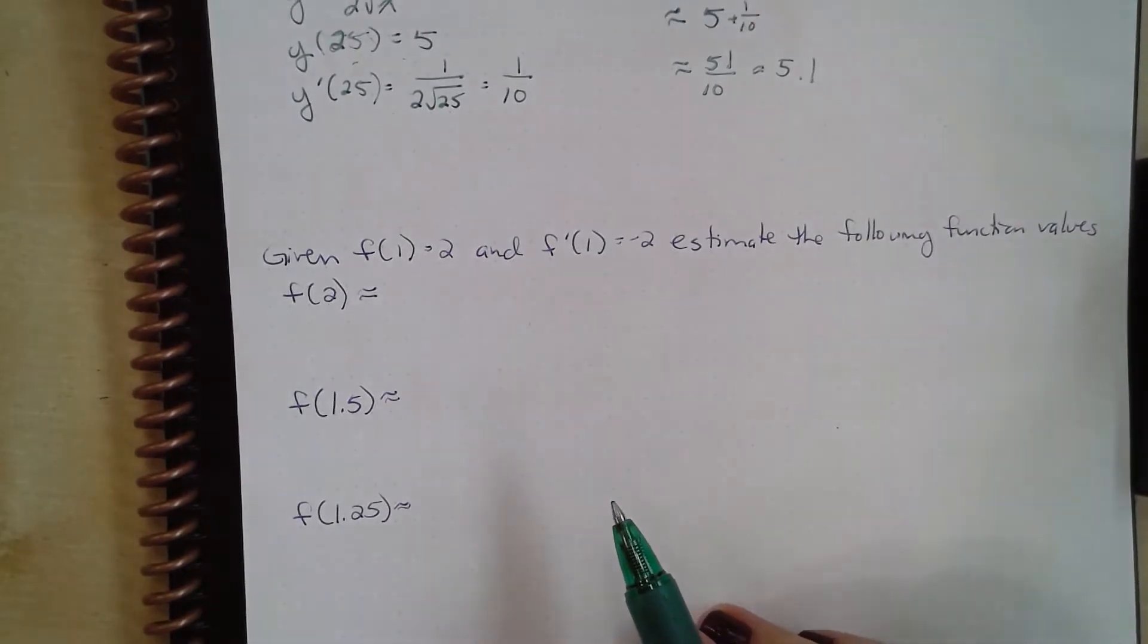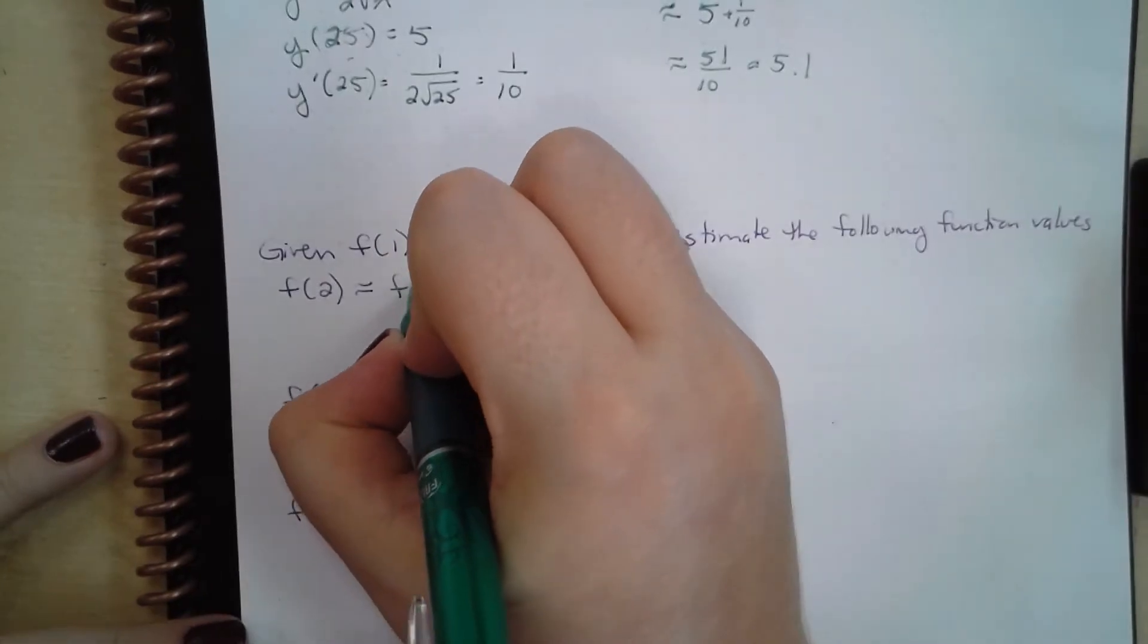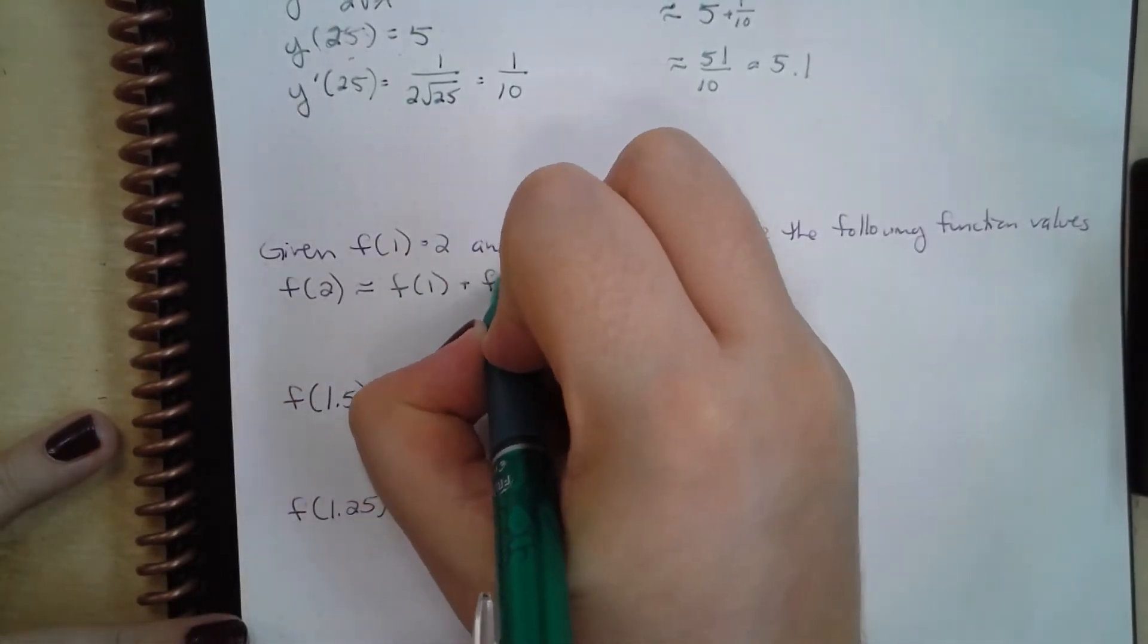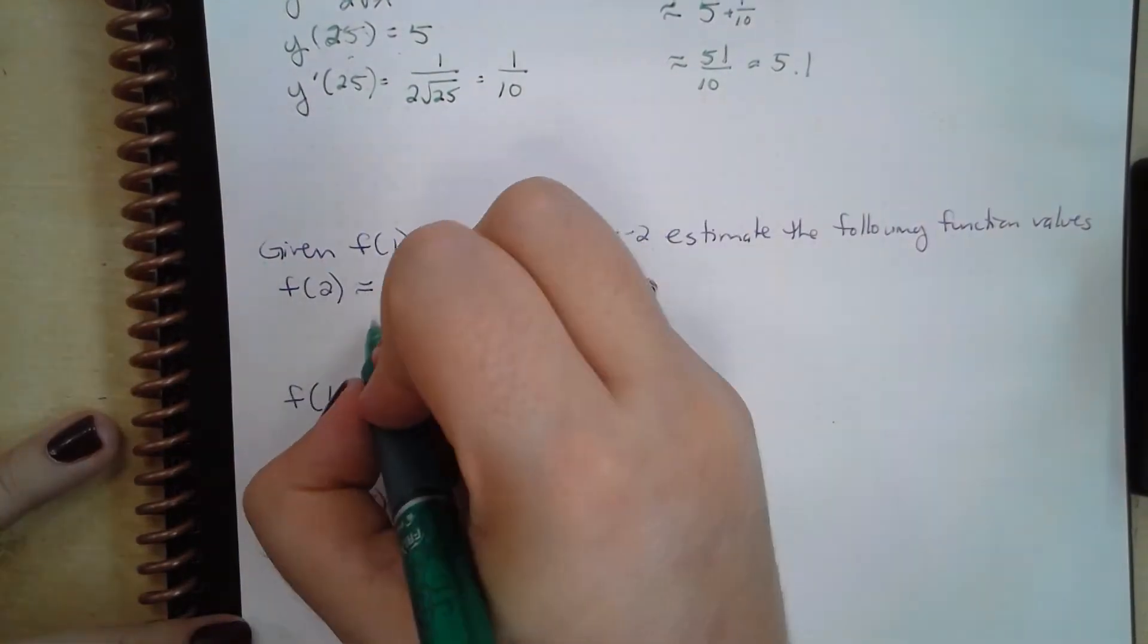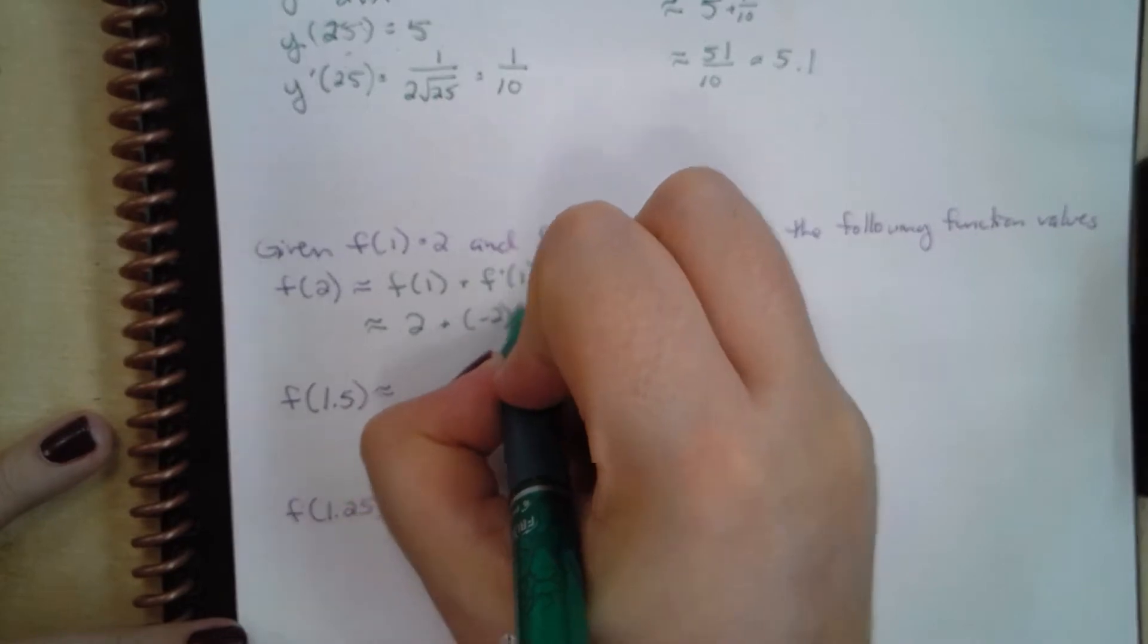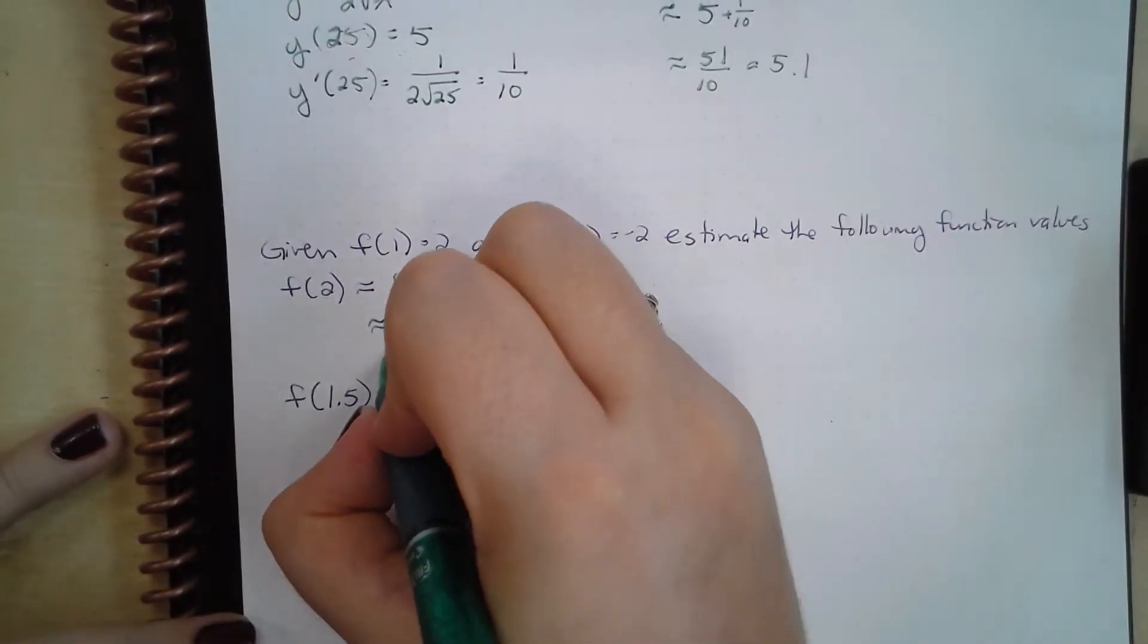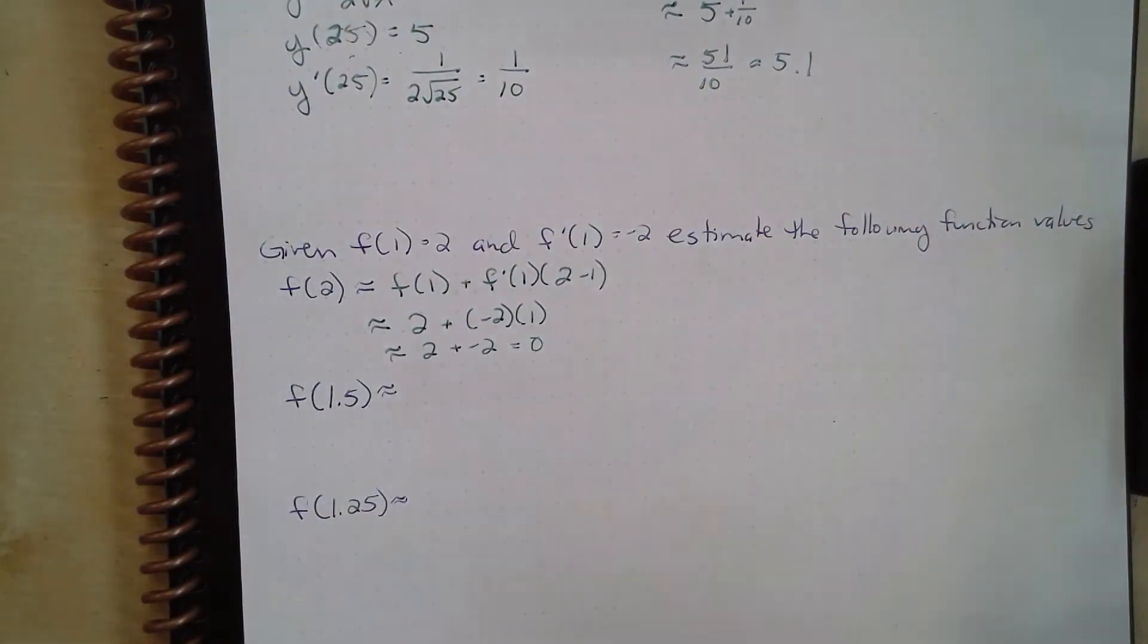First, we want to estimate f(2). Well, f(2) is going to be approximately equal to f(1) plus f'(1) times (2 minus 1). So this is going to be approximately 2 plus negative 2 times 1, which is approximately 2 plus negative 2, which is 0.